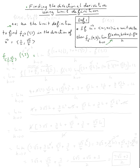Looking at the definition, it's the limit as h approaches zero of f(a + h·u₁, b + h·u₂) minus f(a, b), all divided by h. Here a = 1 and b = 3. So that's f(1 + h·u₁, 3 + h·u₂), where u₁ = 1/2 and u₂ = √3/2, minus f(1, 3), divided by h.